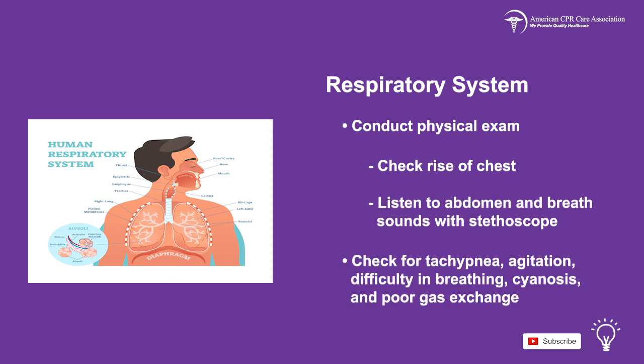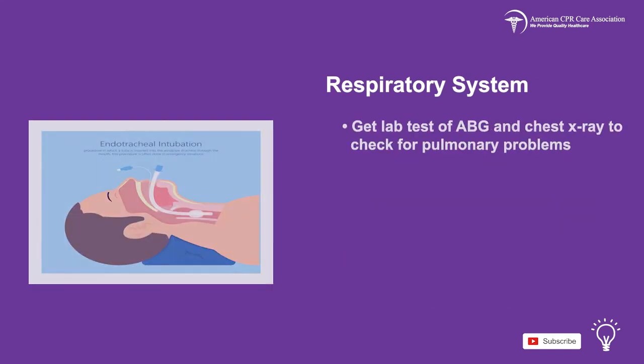Check for tachypnea, agitation, difficulty in breathing, cyanosis, and poor exchange of gases. Then get a lab test of the arterial blood gas and a chest x-ray to check for any pulmonary problems and confirm correct placement of the ET tube if present.